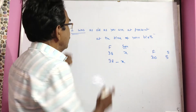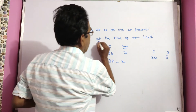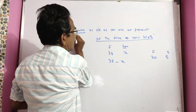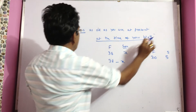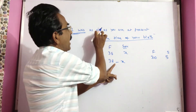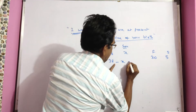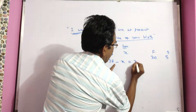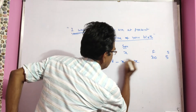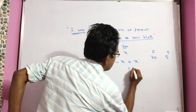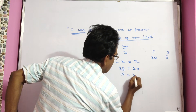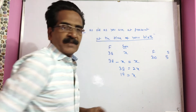Now, what does the father say? At the time of your birth, I was as old as you are at present. So this implies 38 minus x equals x, which gives us 2x equals 38.